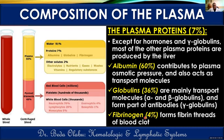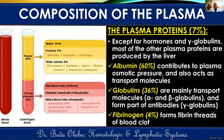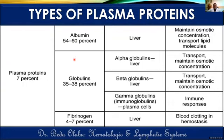Fibrinogen is a soluble plasma protein present in its soluble form under normal conditions. When a blood clot is forming, fibrinogen is converted to fibrin, which forms visible threads within the clot. So fibrinogen is essentially a clotting factor. The table summarizes these three key plasma proteins — albumin, globulins, and fibrinogen — along with their sources and key functions.